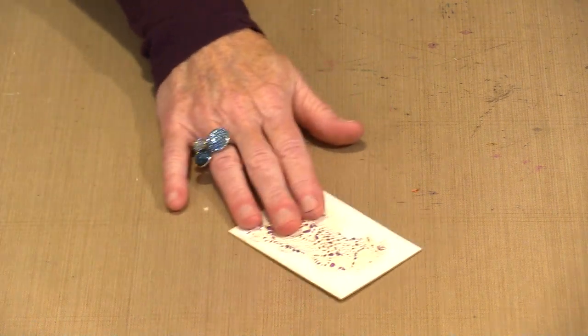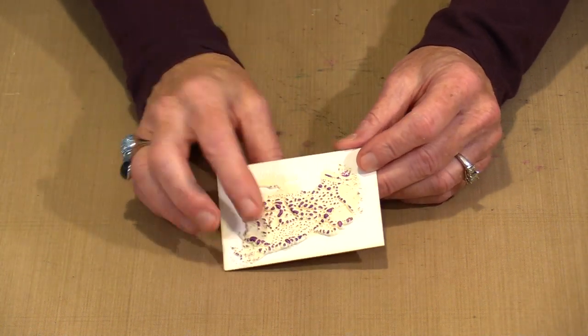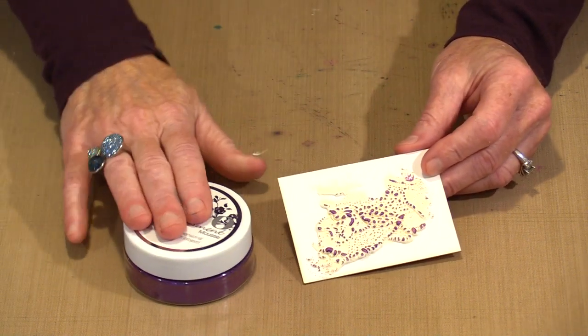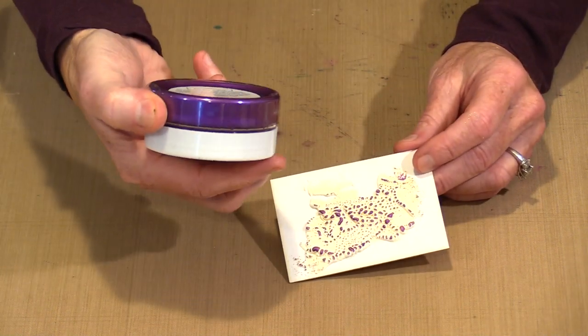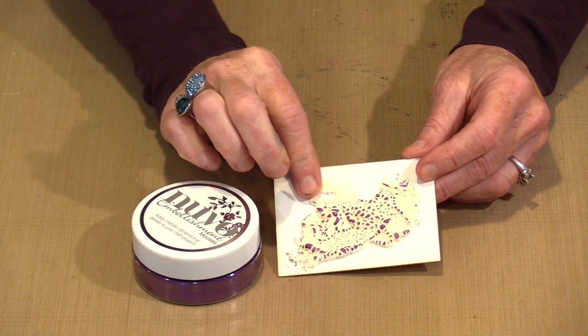So once this stuff cools, you can put stuff on top. So you can dry brush with paint if you want. This is Nuvo Embellishment Mousse. You can use Embellishment Mousse. This color is Royal Aubergine. So that is what I did here.